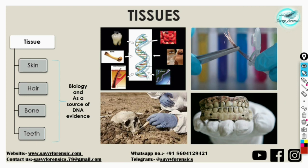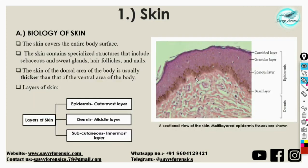Let's understand about skin. What is skin? Skin is the largest organ of the body. It covers the entire body and has many specialized structures that include various glands like the sebaceous and sweat glands. Other structures are the hair follicles and nails.